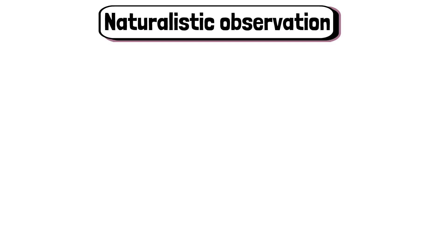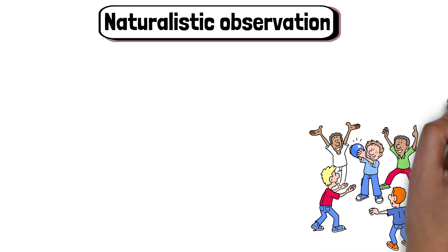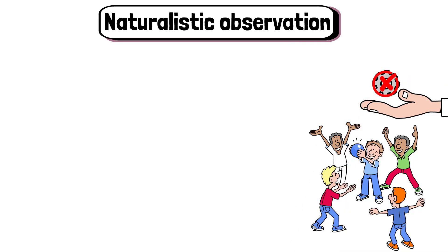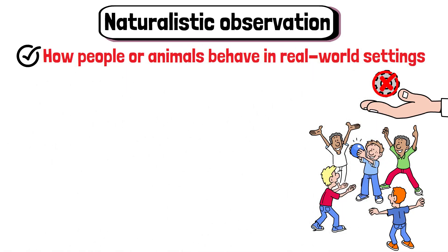Naturalistic observation is a research method where researchers observe subjects in their natural environment without interfering or controlling any variables. The goal is to gather data on how people or animals behave in real world settings.